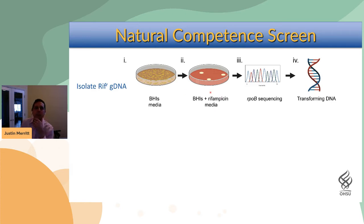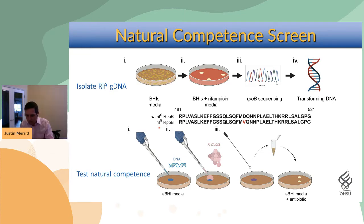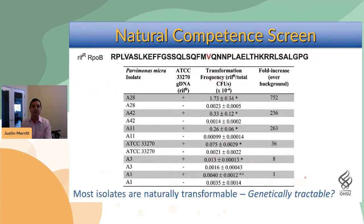If you plate your organisms on media supplemented with rifampicin — we like rifampicin because a single point mutation in the rpoB gene encoding the beta subunit of RNA polymerase will make organisms resistant to this antibiotic. Once you have a resistant isolate, you have a source of transforming DNA you can use for antibiotic selection. We spotted the DNA on an agar plate, then spotted the test organism right on top, let that grow for a day or more, scraped it off a non-selective plate, and replated it on antibiotic media to check for transformants.